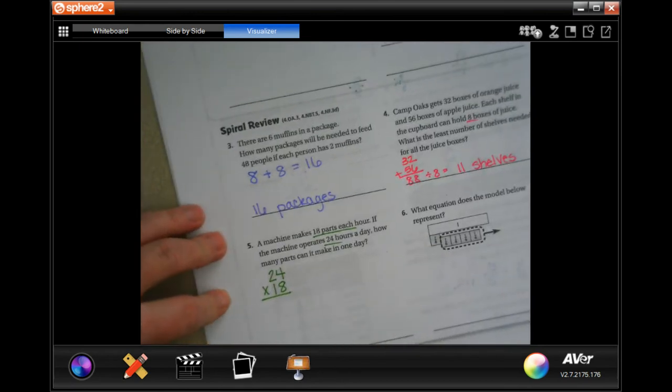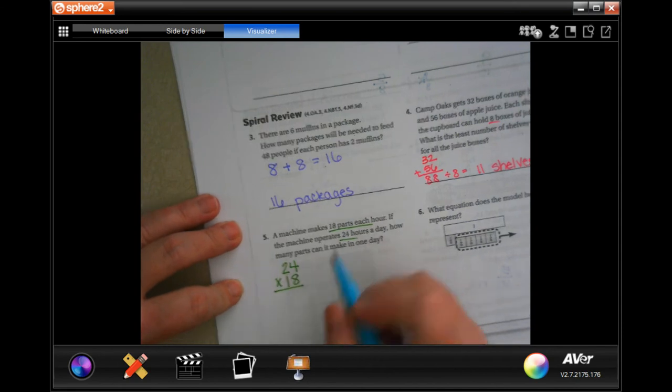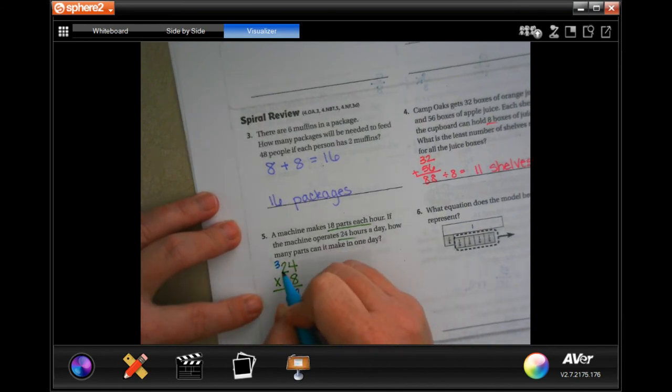Eight times four is 32, carry the three. Eight times two is 16, plus three more is 19.